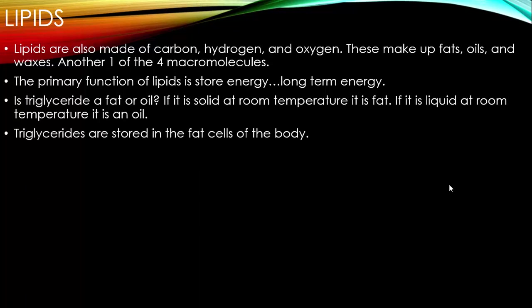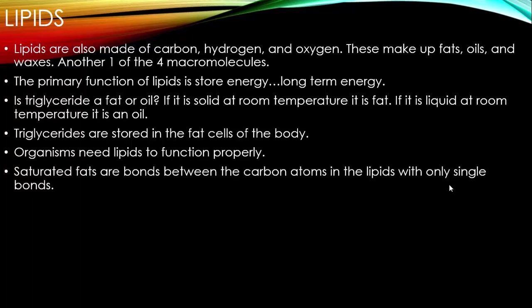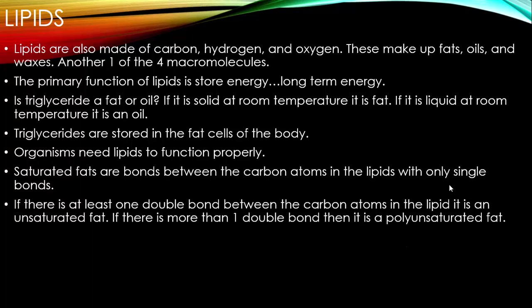Triglycerides are stored in the fat cells of the body. Organisms need lipids to function properly — you need fats in order to function properly. Saturated fats have only single bonds between the carbon atoms in the lipids. If there is at least one double bond between the carbon atoms in the lipid, then it's an unsaturated fat. If there's more than one double bond, then it's a polyunsaturated fat, meaning there are many double bonds. So next time you see that on a nutrition label, you'll know they're talking about single and double bonds.